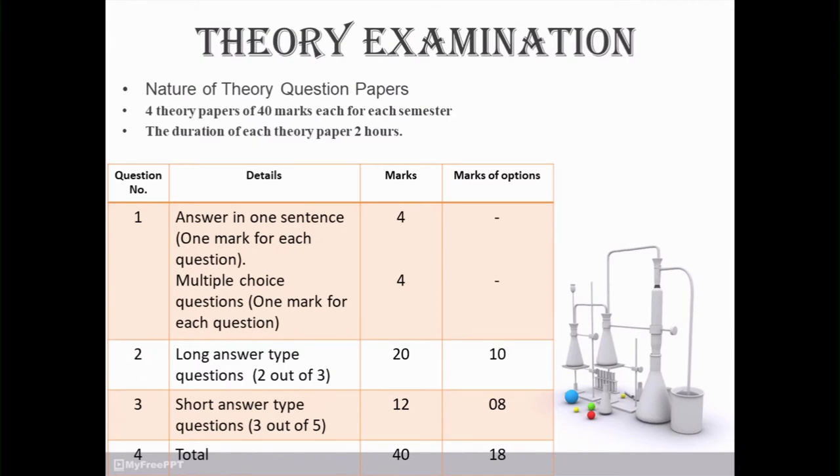Question No. 3, it consists of 5 questions and having the weightage of 12 marks. So out of 5, you have to solve three questions and each carry 4 marks. So 4 into 3, total 12 and with the options, total 8 marks are there. So from this academic year, your theory paper consists of 40 marks out of 40, 18 marks with the optional.